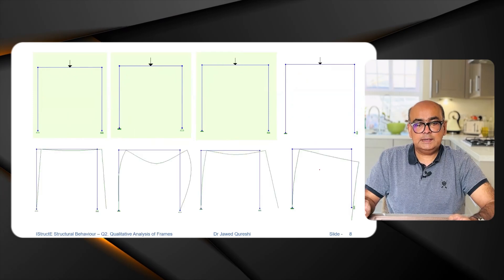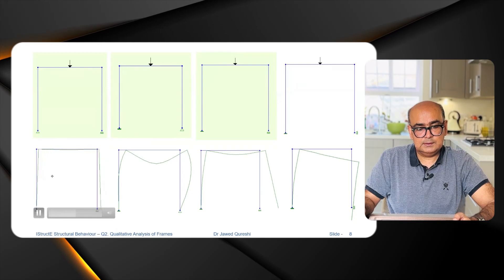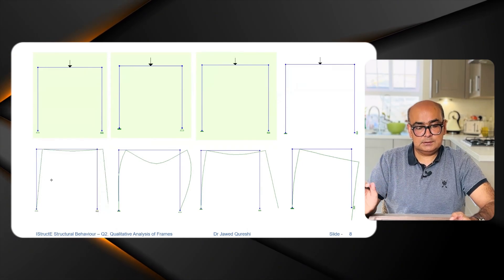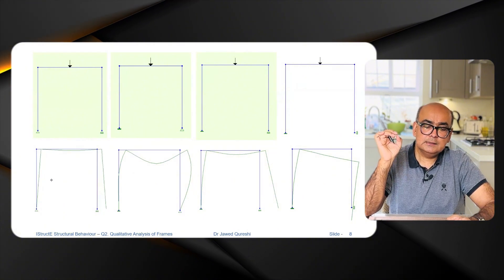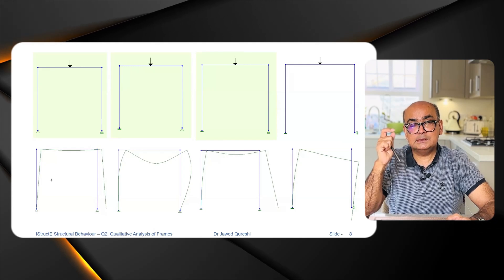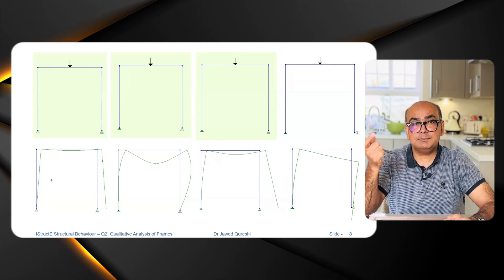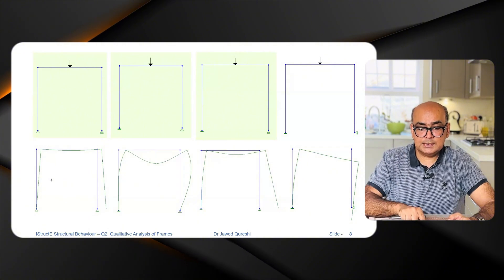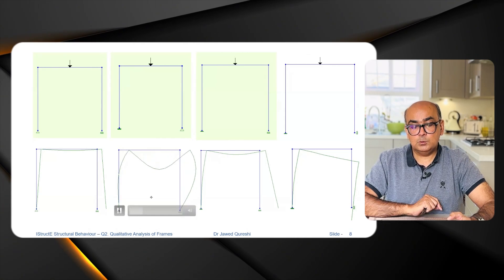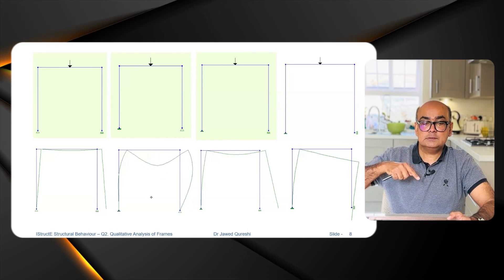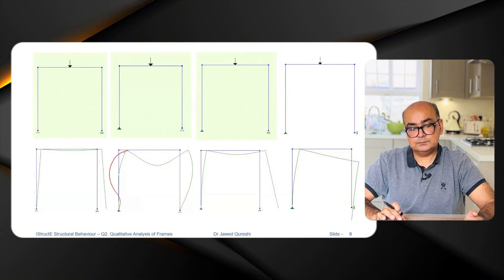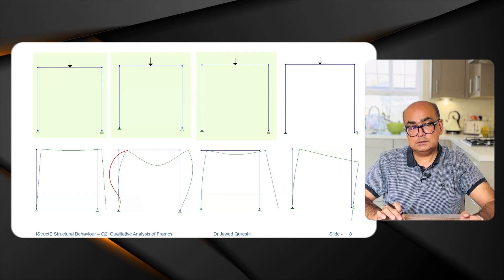Now let us see the animations for all of these. For the first case, observe that the roller support is causing it to move in the rightward direction, and bending is only happening in the top beam. Because bending is only happening in the beam, columns are not bending and there will be no bending moment in the columns. For the second case, you can see we have bending in the beam and bending in both columns. Bending in the right column is in one direction only, while in the left column the bending switches sides.